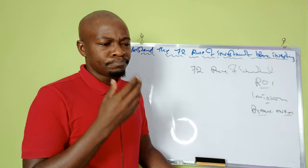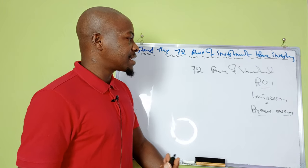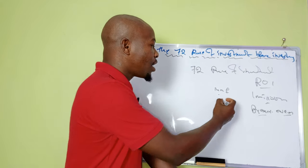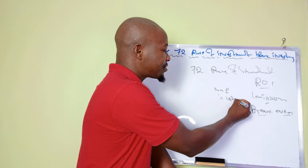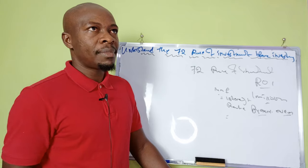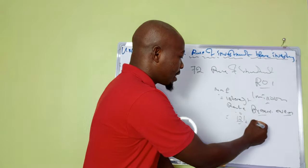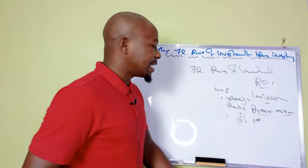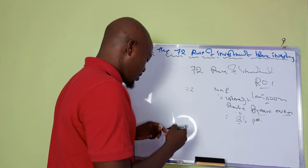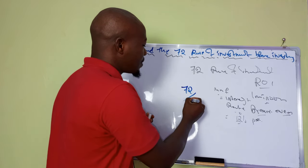And by the way, if you hate mathematics, this one is an easy one — I promise you. Here is what you do. If today you come across an investment — let's call it an MMF, a bill, treasury bonds, whatever the investment is — what you consider is the interest rate. What is the interest rate? Let's say you go with an interest rate of 12% per annum. For you to understand exactly how long it will take to break even, you take the magical number 72 and divide it by 12.